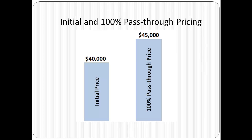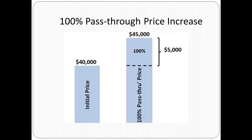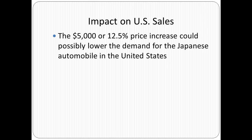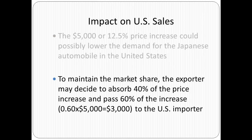Here is a graphical view of 100% pass-through. The price has gone up from $40,000 to $45,000 over a year, and the price increase is $5,000. With 100% pass-through, the impact on US sales could be that the demand for the Japanese automobile in the United States might decline because of the $5,000 price increase.